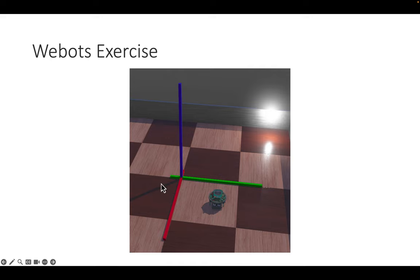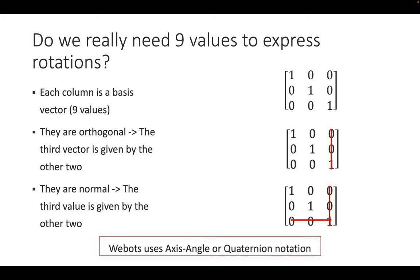There is a video on Coursera where you can see these coordinate values and change them to observe what happens — I recommend watching it. We also discuss why much fewer than nine values are needed to express rotations. In Webots, axis-angle or quaternion notation gets away with just four numbers. The intuition is that the robot's pose is described by three basis vectors (x, y, z axes), and these vectors are orthonormal — meaning they are orthogonal and each has length one.